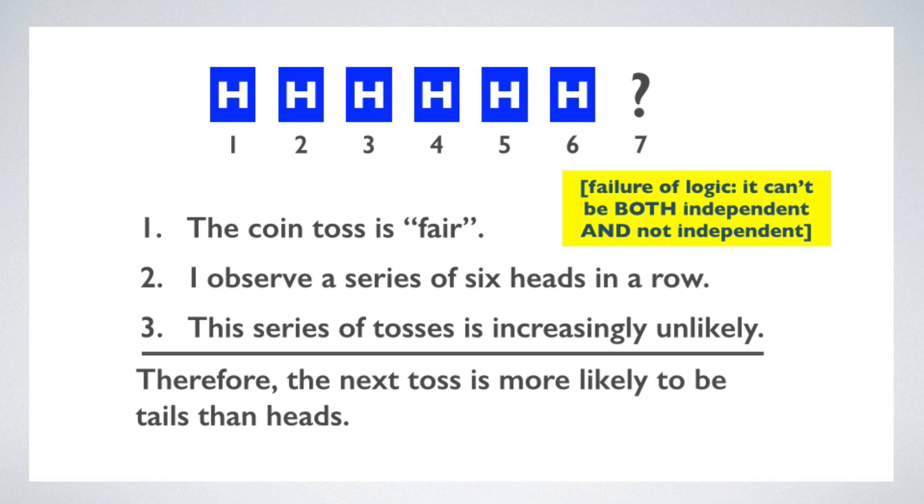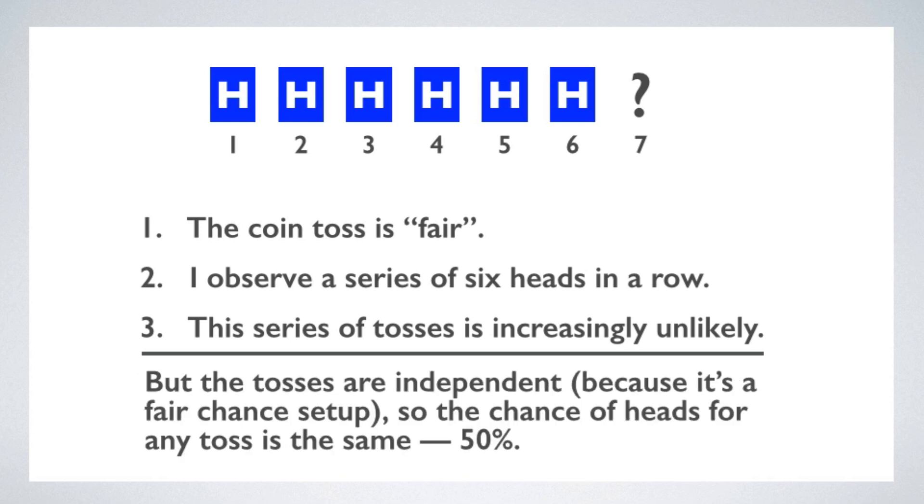We can think of this fallacy as a failure of logic. The assumption of fairness implies that the tosses are independent. The conclusion implies that they're not independent. The result is a logical contradiction. Now, one way to resolve the contradiction is like this. You make the correct inference, based on the assumption, and grant that the chance of heads for any toss is always the same, 50%.